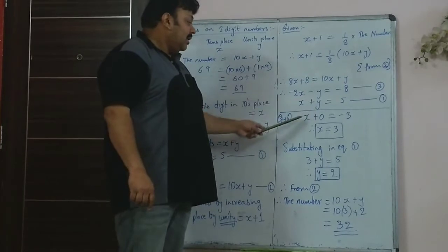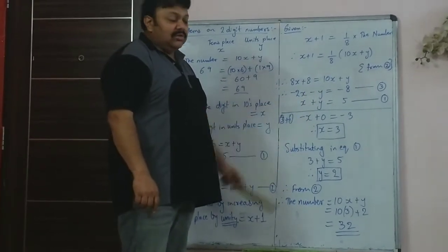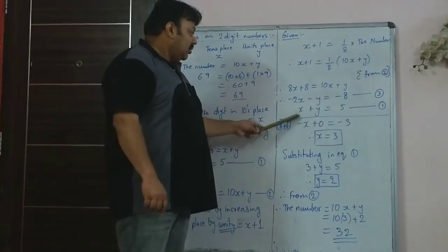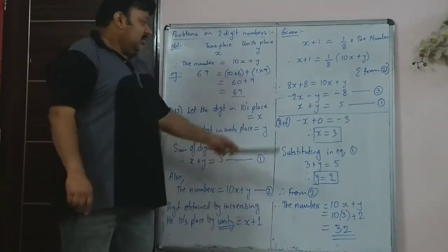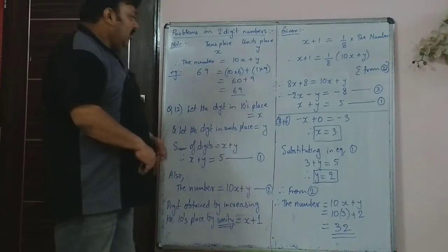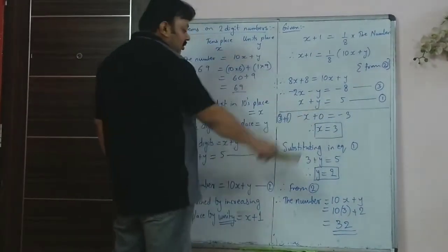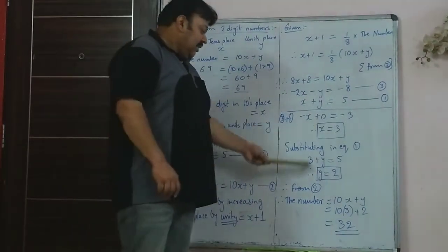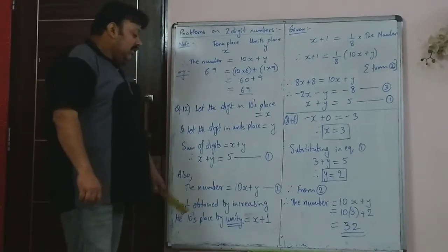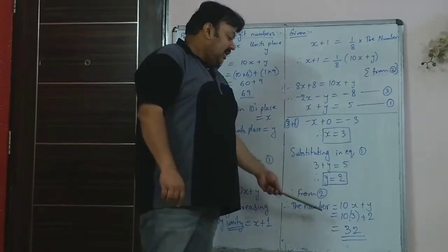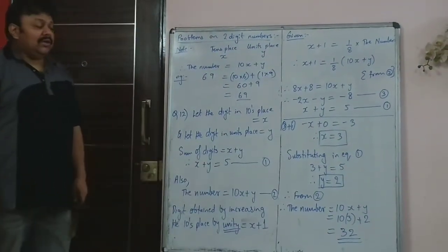The two equations when added — since coefficients are the same and signs are opposite — give minus x plus 0 equals minus 3, so x equals 3. Substituting x equals 3 gives y equals 2. The original number is 10x plus y, that is 10 times 3 plus 2, which equals 32.